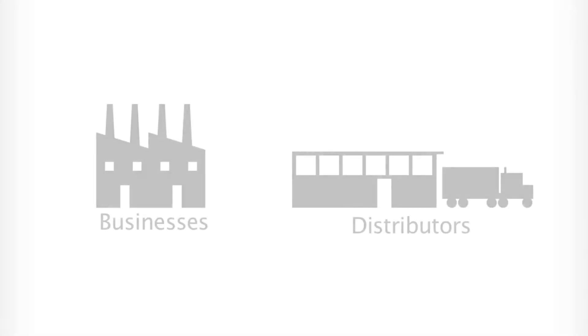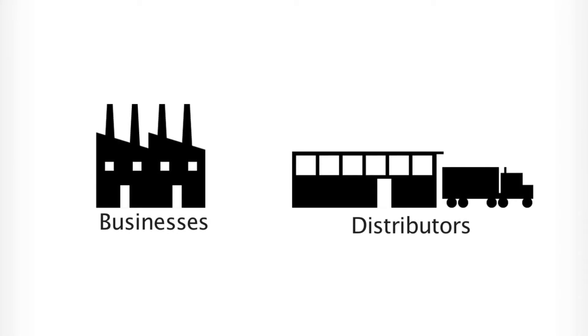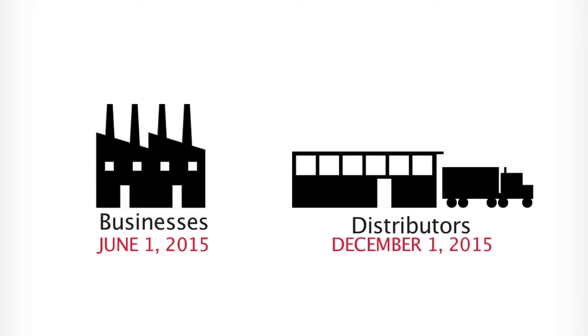The compliance dates for both businesses and distributors fall this way. By the end of 2013, you're going to have training already completed for the new system and familiarization with the new safety data sheet format — that's for all employers. Most businesses won't have to comply with all elements of the new standard until June 1, 2015. Distributors can continue to sell products labeled under the old format up until December 1, 2015.